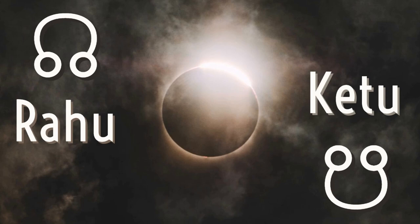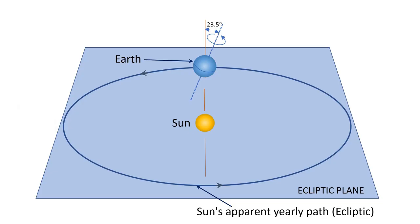Let's take a closer look at the diagram on the screen to understand this. First, let's define what the ecliptic is. The Sanskrit word for the ecliptic is Appamundra. The Earth is tilted at an angle of about 23.5 degrees to its orbital plane. Earth rotates around its axis in this position and also revolves around the Sun, taking 24 hours to rotate and about 365 days to complete one revolution around the Sun.